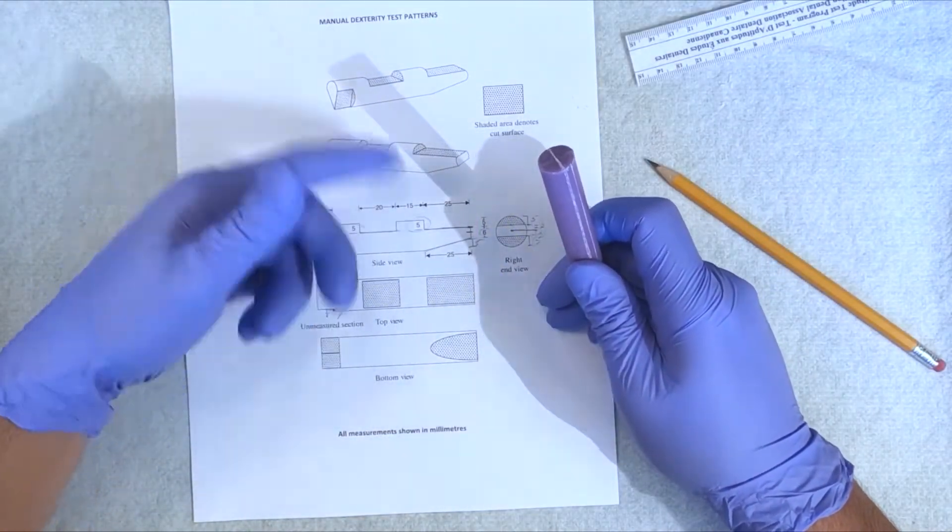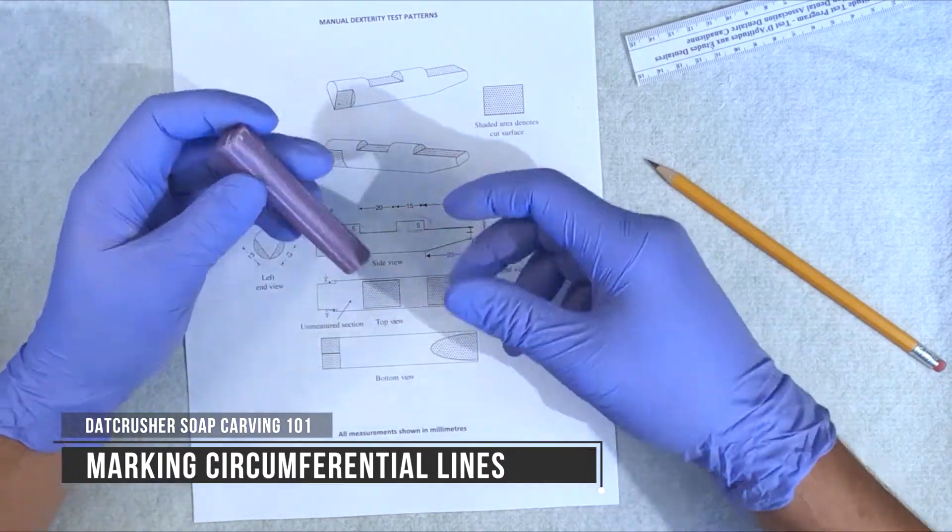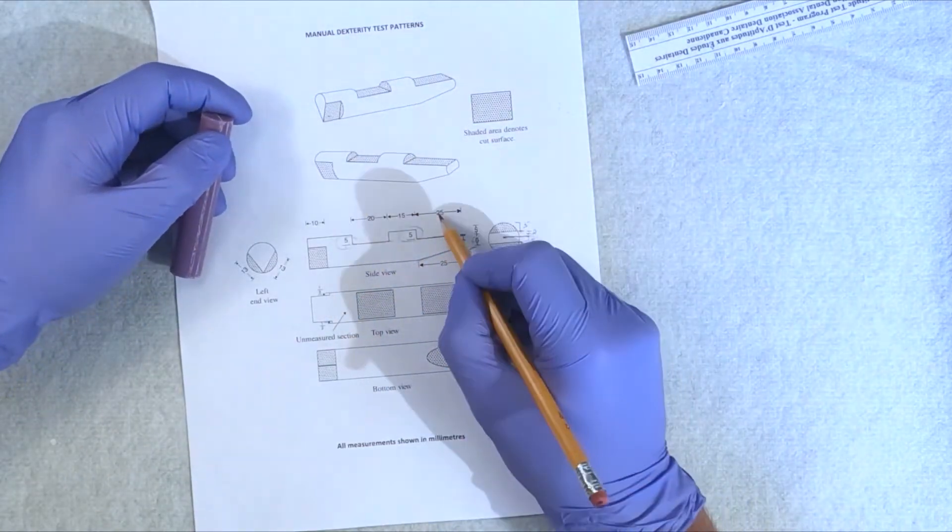We're going to now do our circumferential lines. We're going to do our measurements for 25 millimeters here.